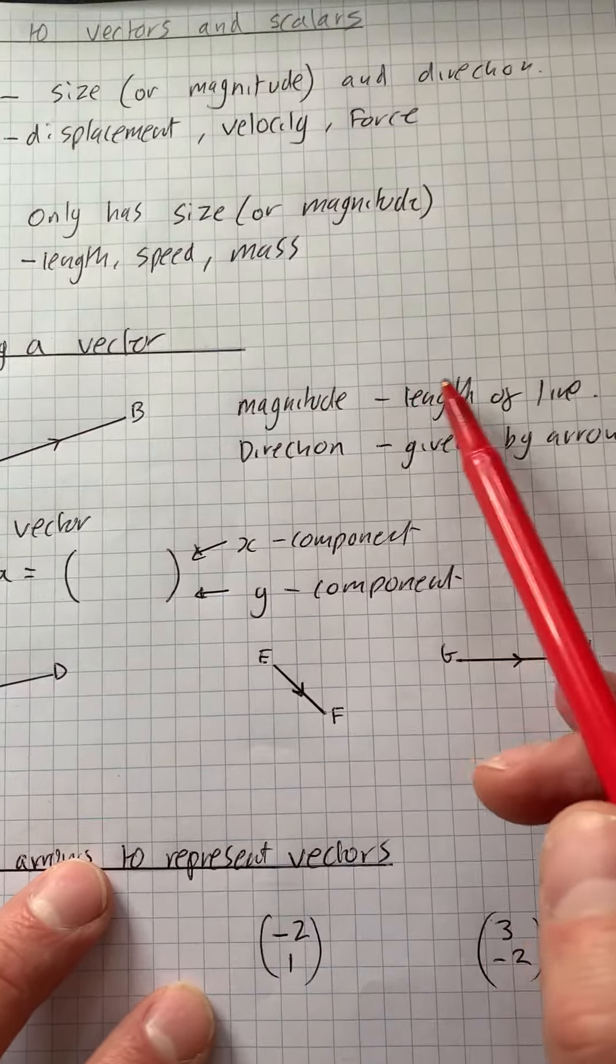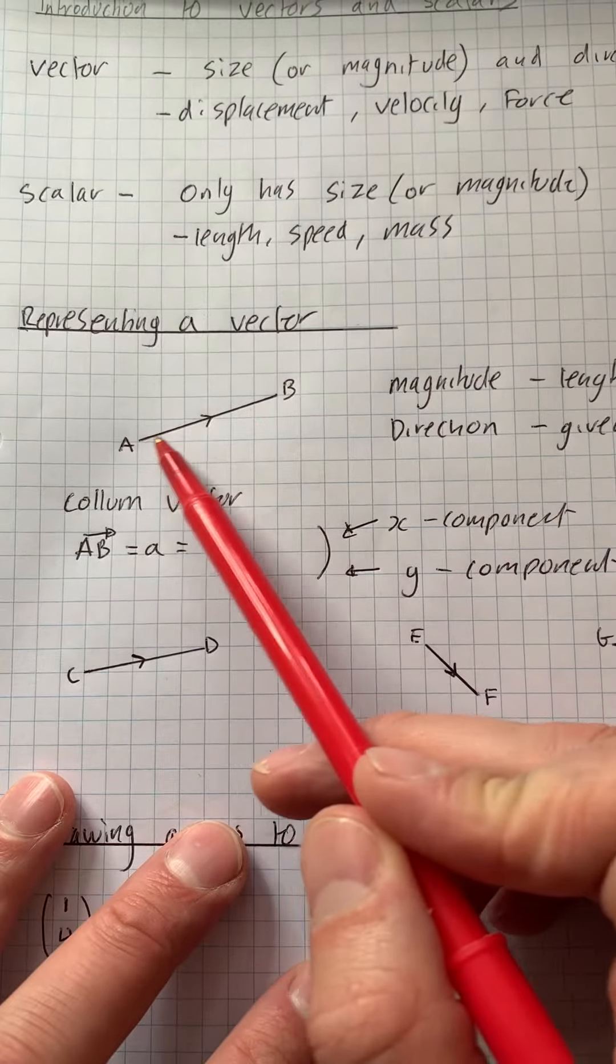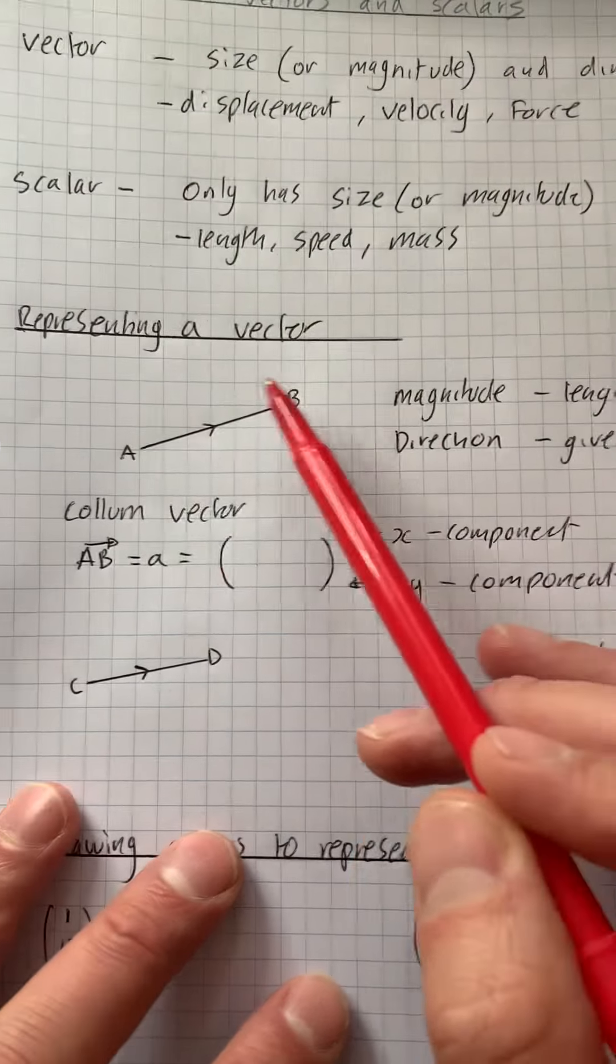So the magnitude is the length of the line, so that's the length here, and the direction is given by the arrow.